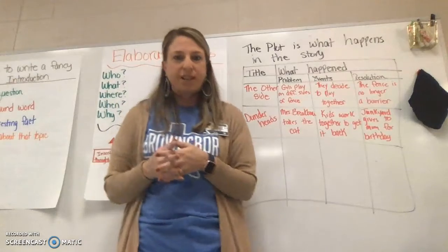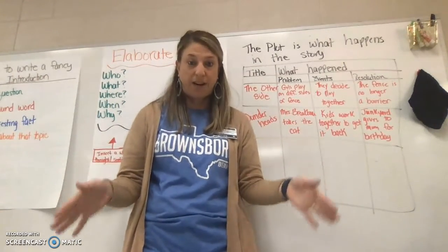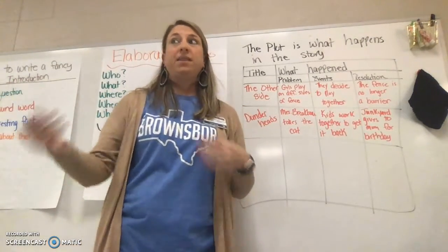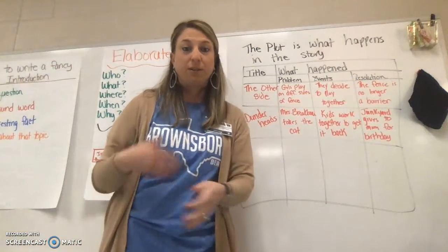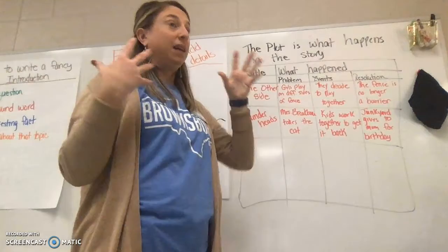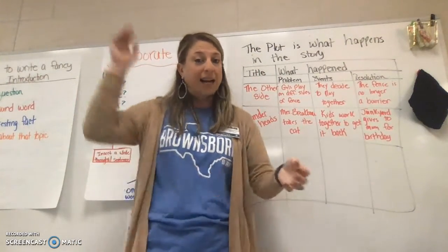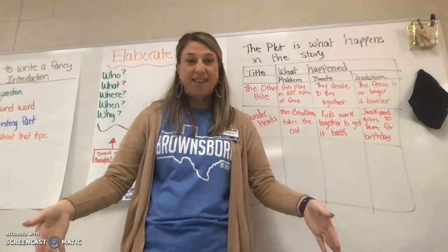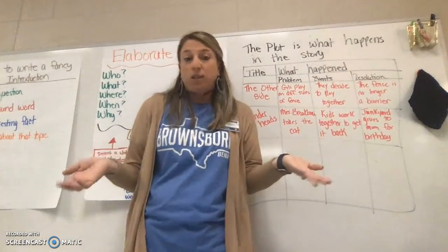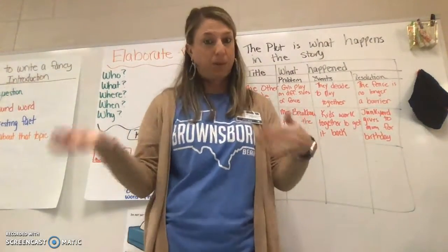Let's think about the book The Other Side with the two little girls who live on opposite sides of the fence and they really wanted to be friends. The problem in the story was the girls were on different sides of the fence, and that kept them from playing together — that was a big problem. The climax is they decide to play together, which was a really big deal and a high point of the story because they had been separated the entire time. And then the resolution is that the fence is no longer a barrier to keep them from being friends. That's how the problem was solved.